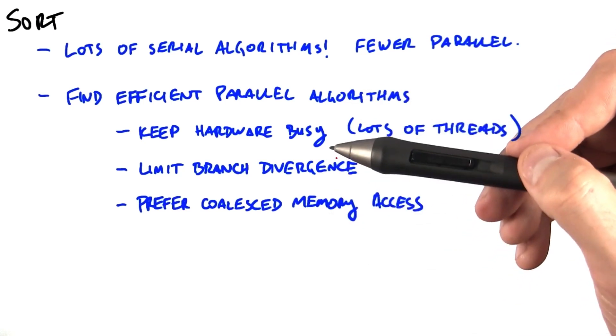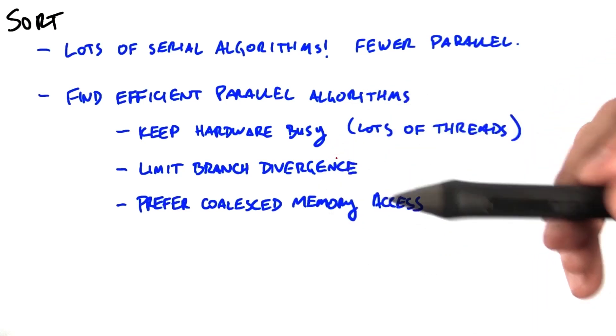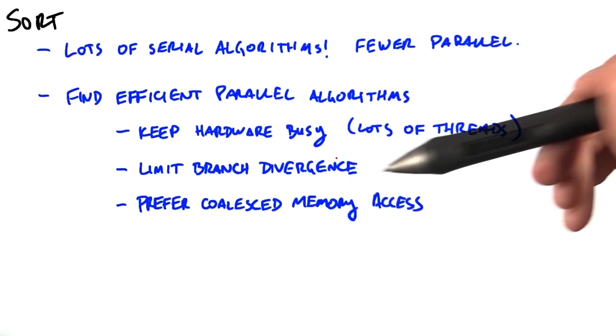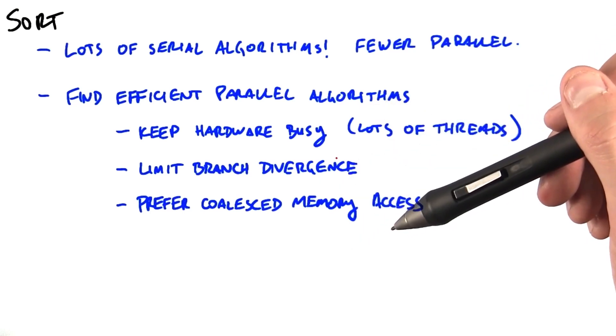So we'd like to take a look at algorithms that have the other characteristics, that can keep the hardware busy, that do limit branch divergence, that do prefer coalesced memory accesses.